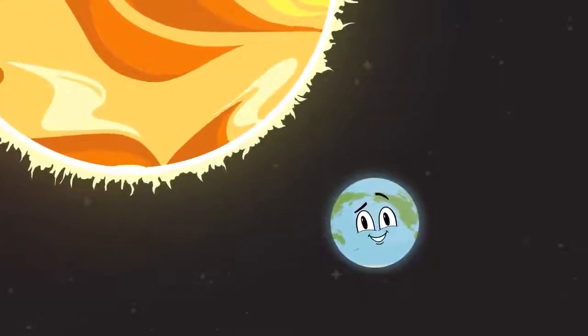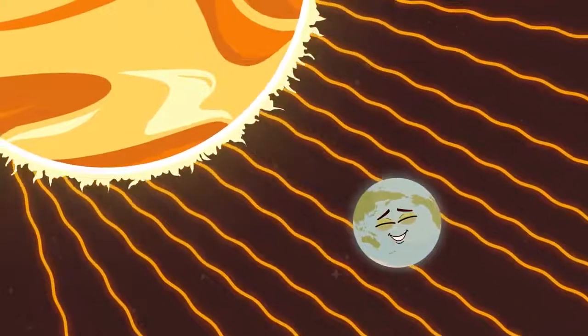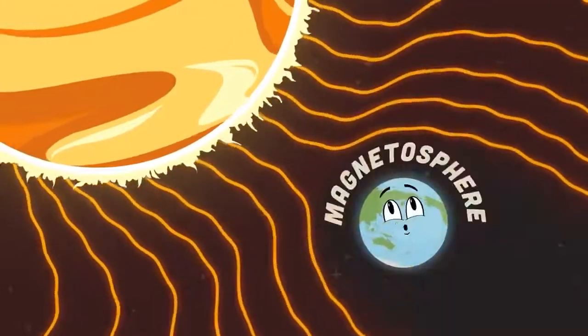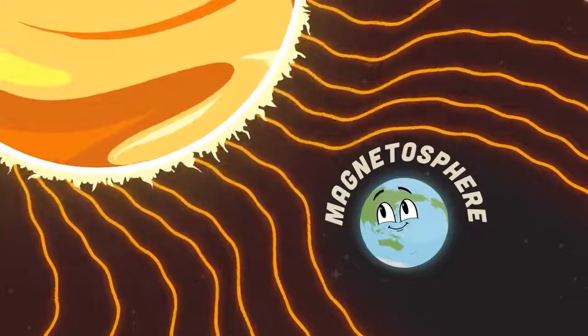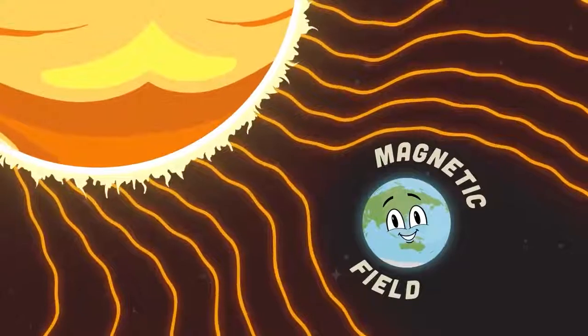How is Earth habitable? Why can life thrive on it? While the sun's plasma blasts towards us, what's protecting us? We're protected by Earth's magnetosphere, also called Earth's magnetic field. Let's learn more right here.